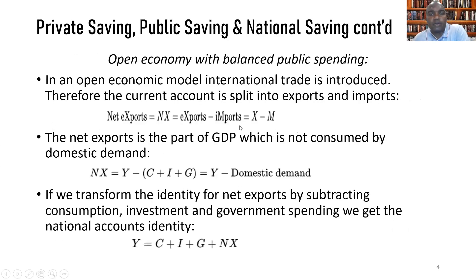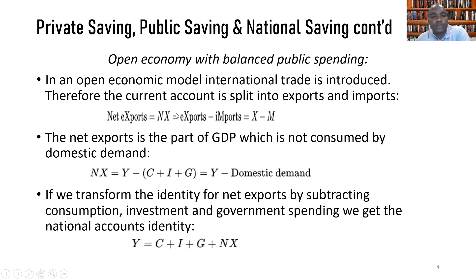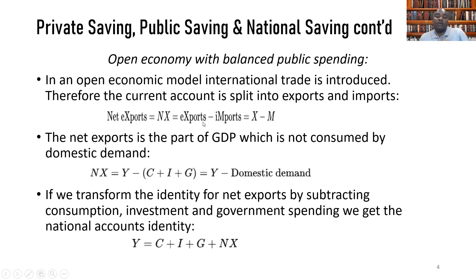In an open economy model, international trade is introduced as the current account is split into exports and imports. Net exports is the difference between proceeds from exports — commodities we sell in other countries — minus commodities we buy from other countries, reflecting the financial flows associated with these two macroeconomic indicators.